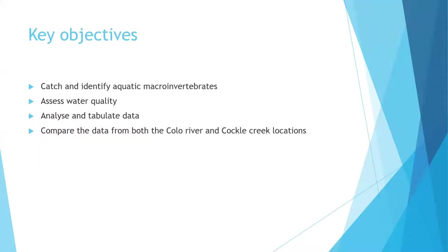The key objectives are to catch and identify aquatic macroinvertebrates to assess the water quality at both locations — at the sites we've selected along our respective waterways. This gives us an understanding of water quality by taking the data collected from the macroinvertebrates we've identified, then analysing, tabulating, and comparing it so we can better understand the water quality of both sites and compare the two.